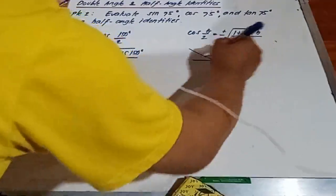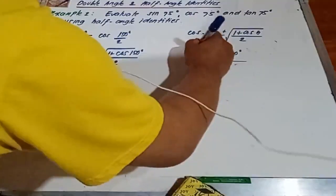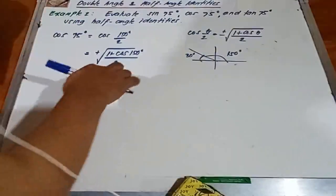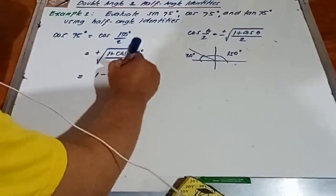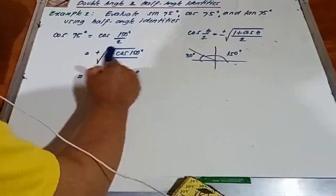150, ito yung 30. And negative dyan si cosine sa second quadrant. So minus cosine 30 degrees over 2.